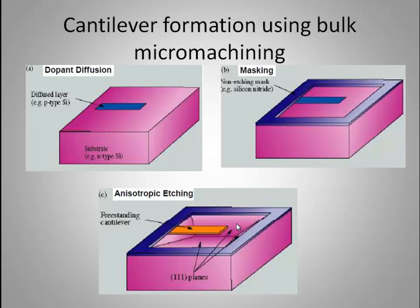So these are the main three steps in bulk micro-machining. First step: doped diffusion. Second step: masking — where protected areas are masked. Third step: etching.